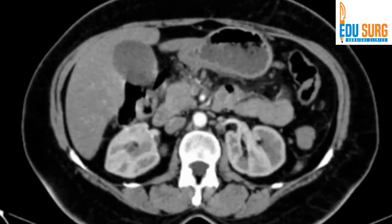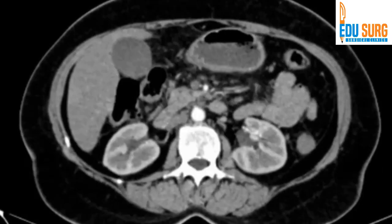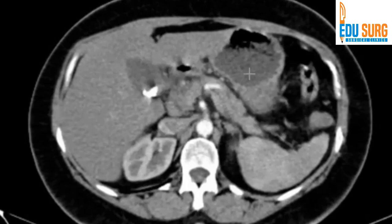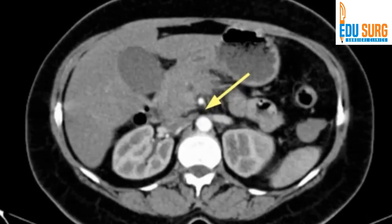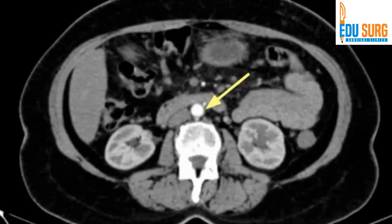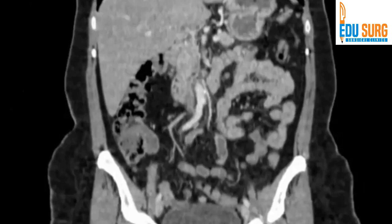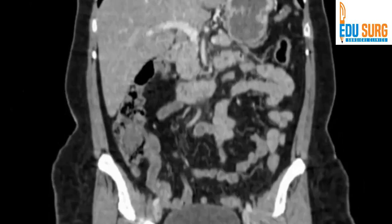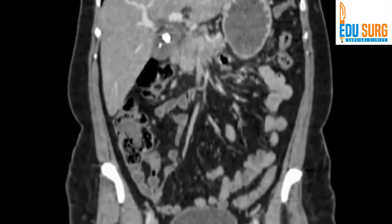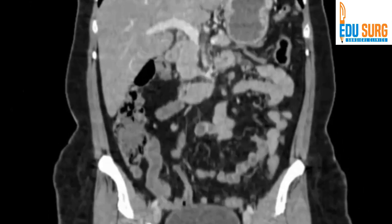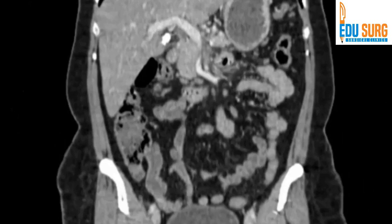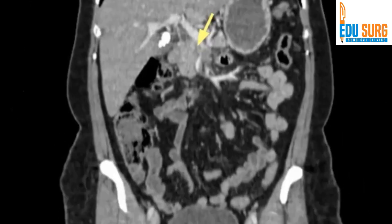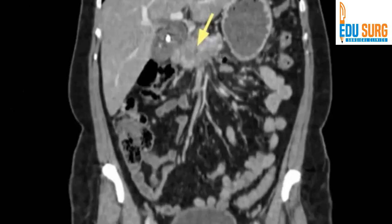No ascites, no liver deposits, no deposits in the lung, but there are peritoneal deposits and bulky lymphadenopathy. Portal vein is encased and the superior mesenteric artery is free. These are the points we would like to know in this scan. To show how portal vein encasement looks: the portal vein is completely encased by the tumor, and the tumor is crossing to the left of the portal vein, meaning the portal vein is encased by the lesion.